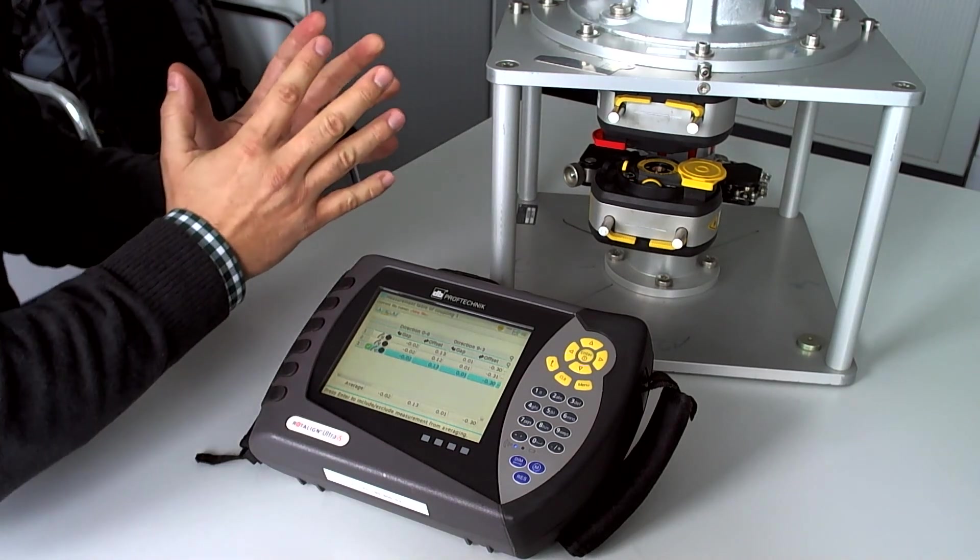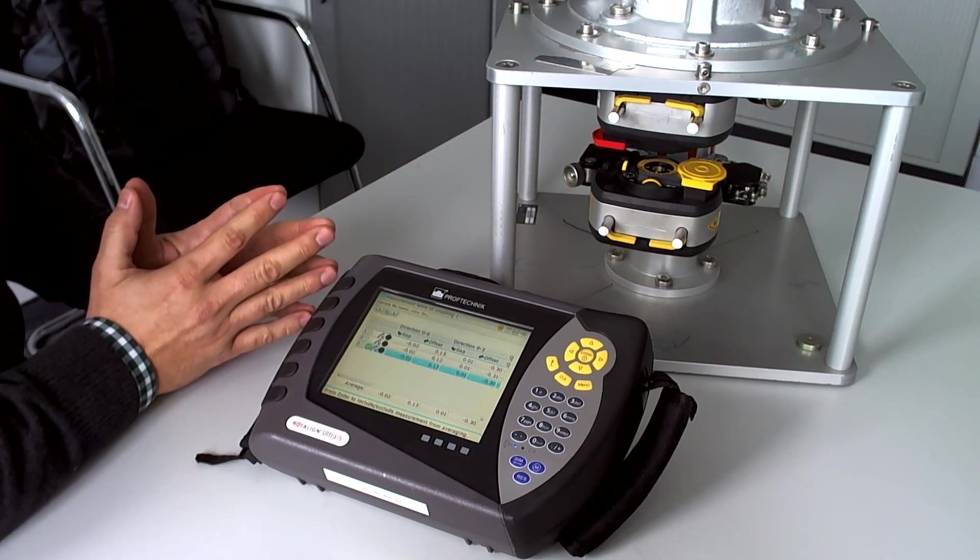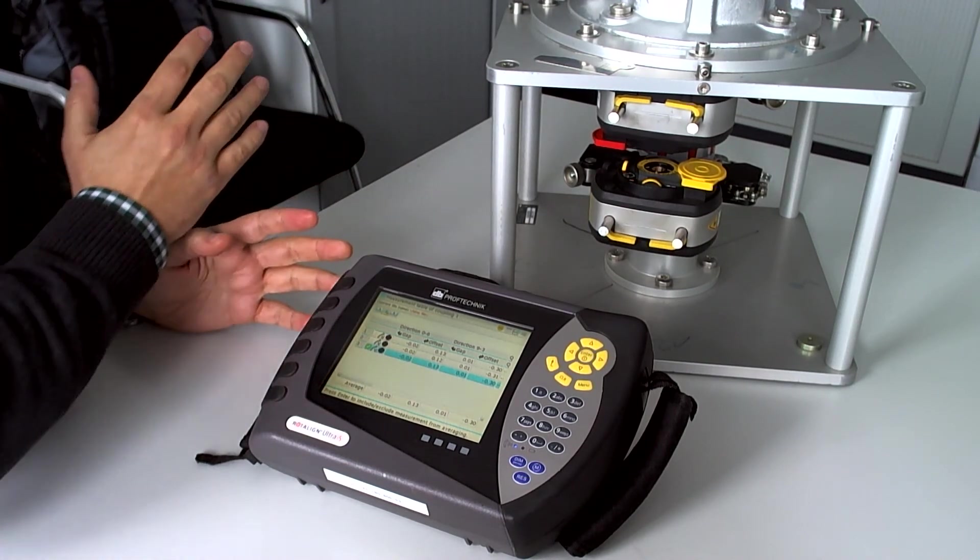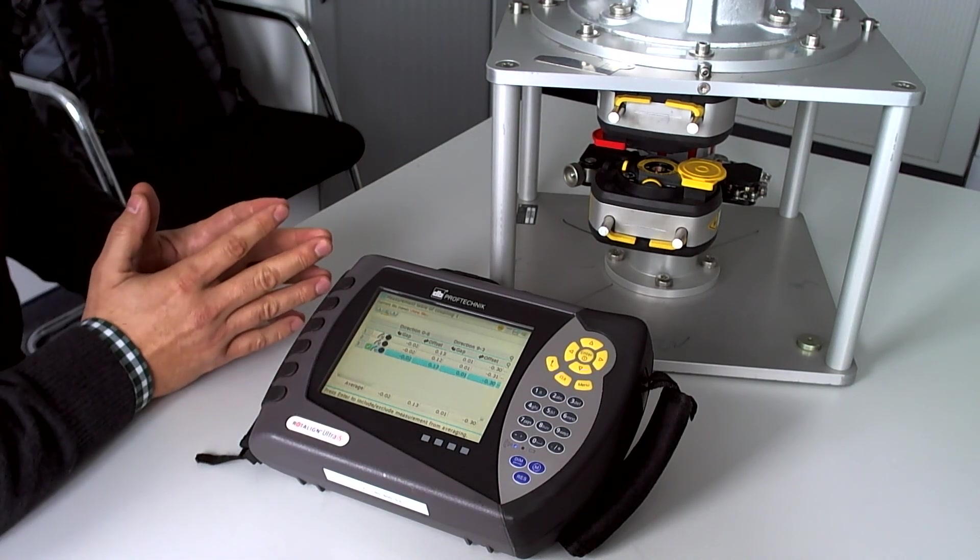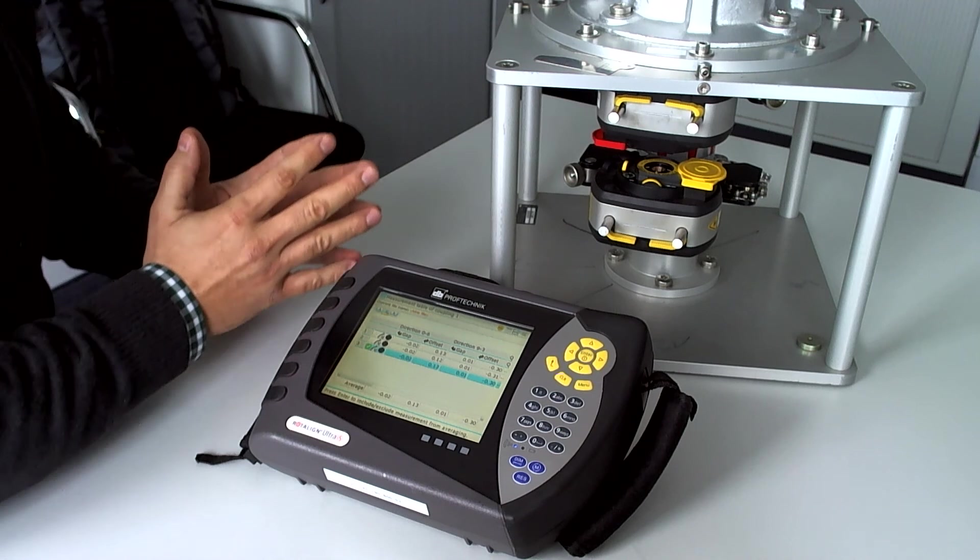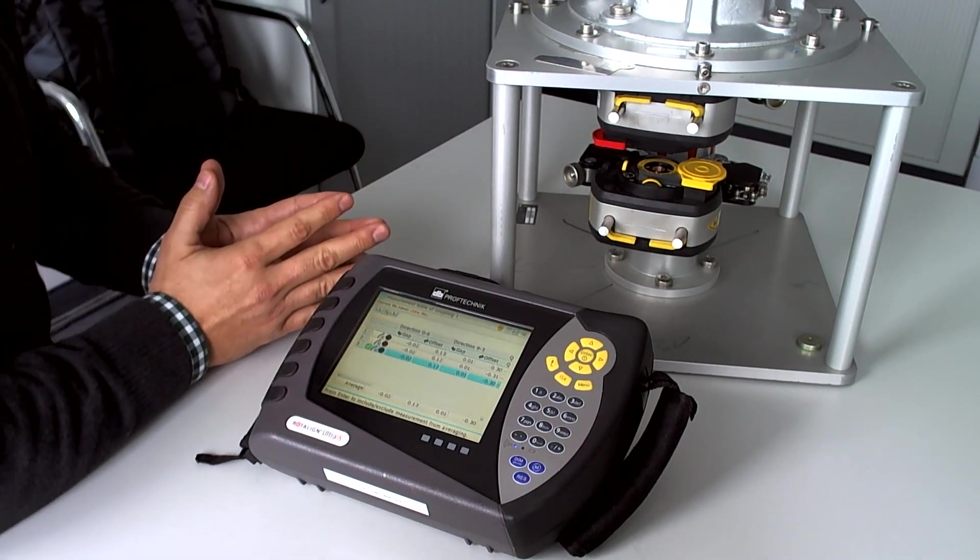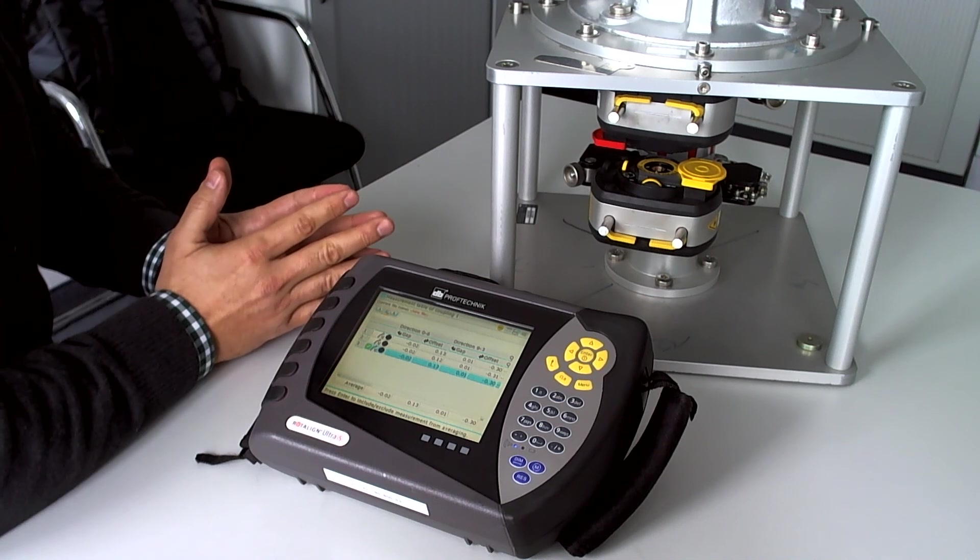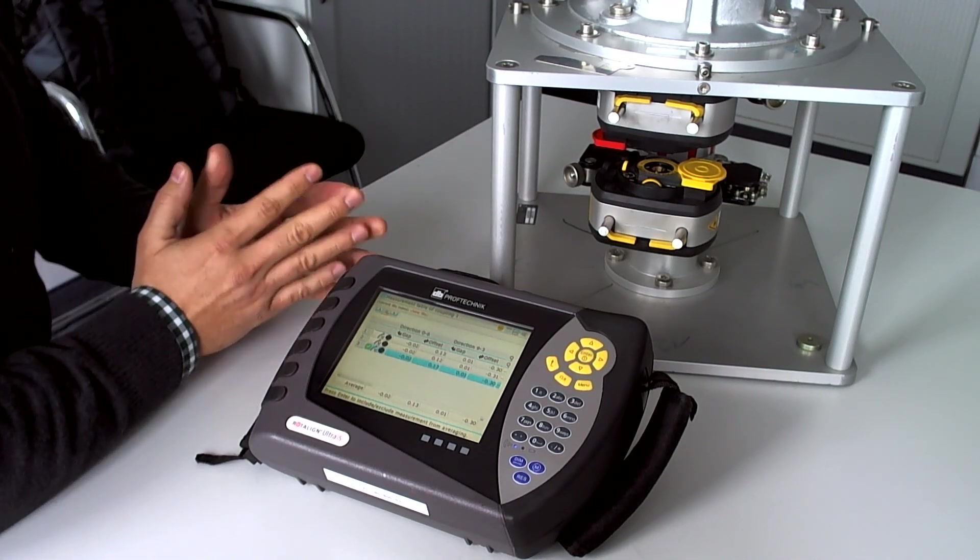No need to define exactly all the predefined positions to take readings because all what we need is a sweep. And due to the constraints and access to the machine, it is much more convenient to rotate the shaft instead of stopping in predefined positions.